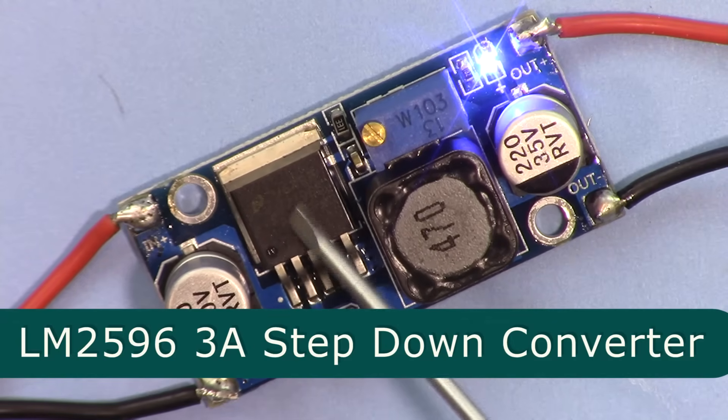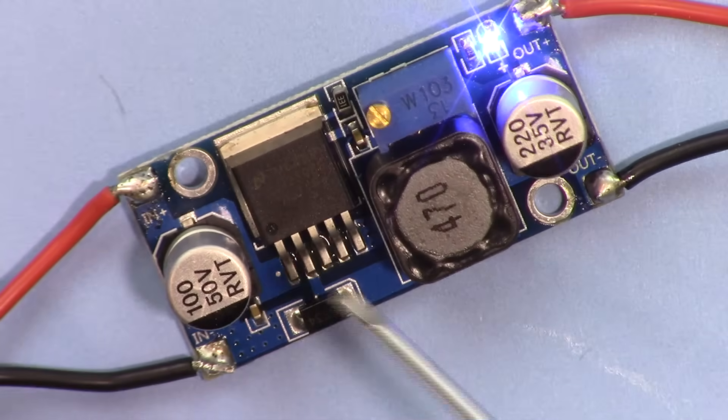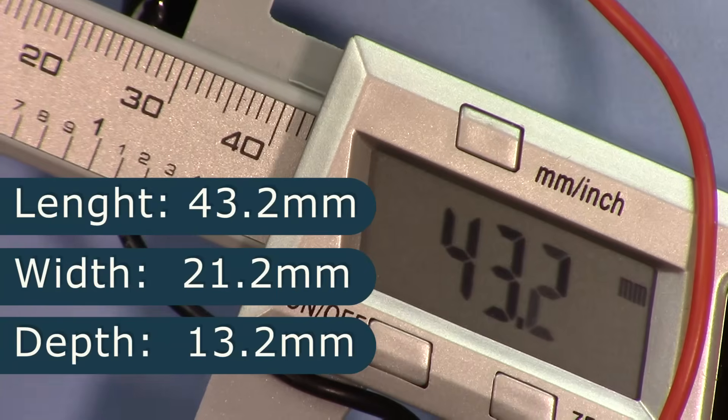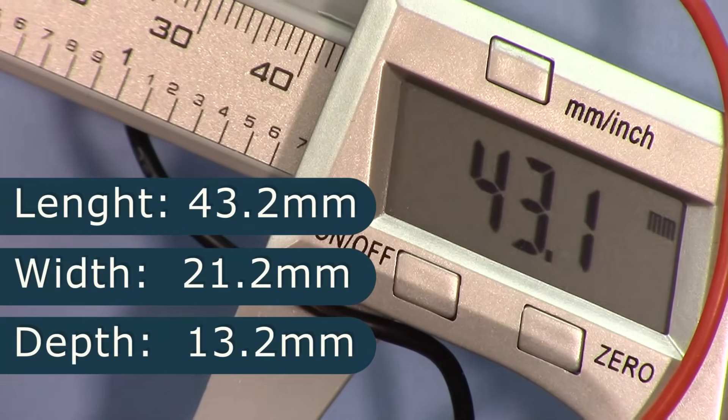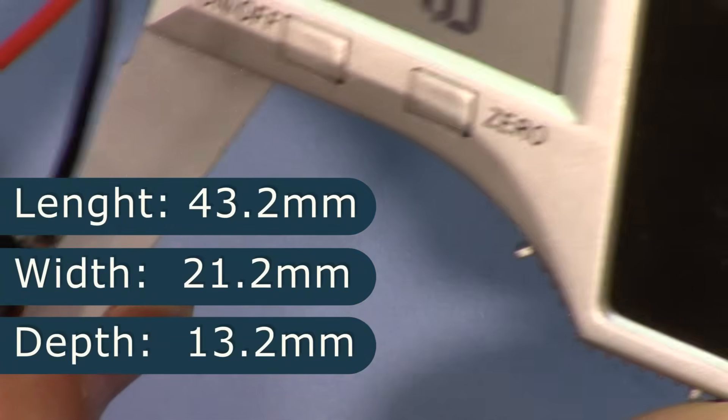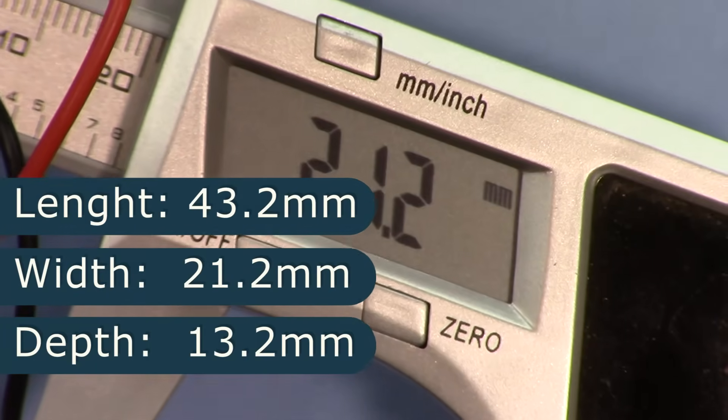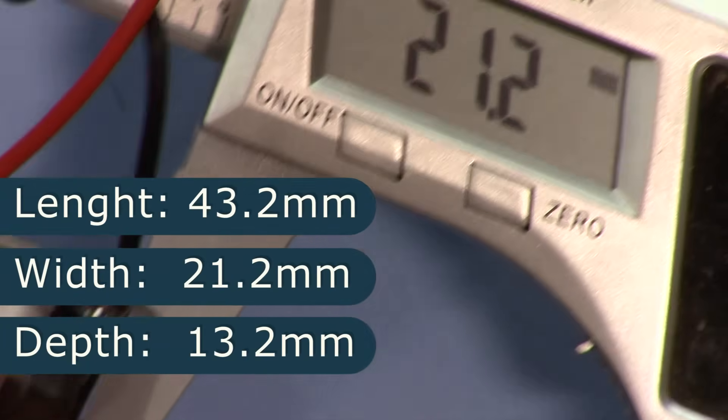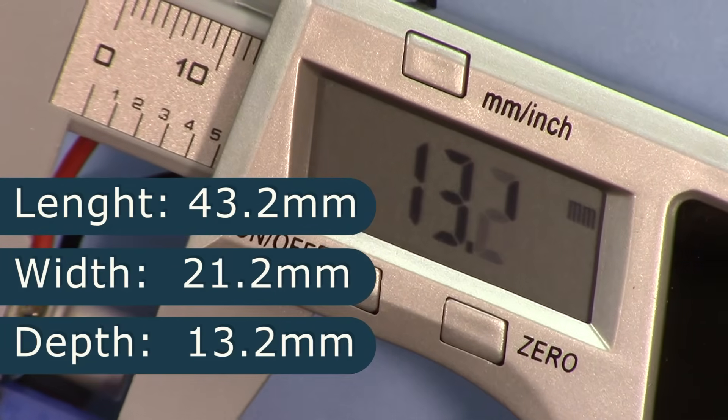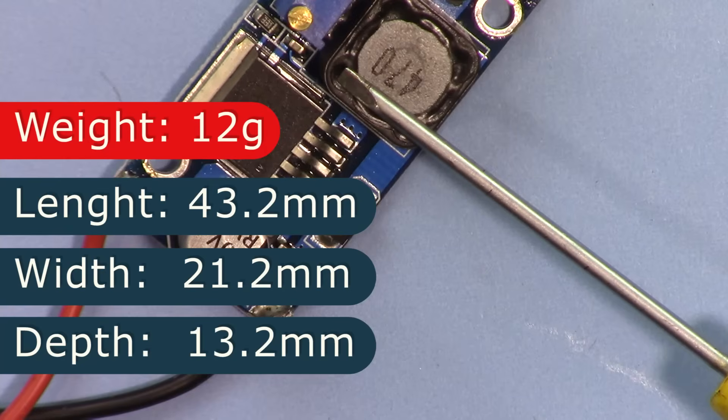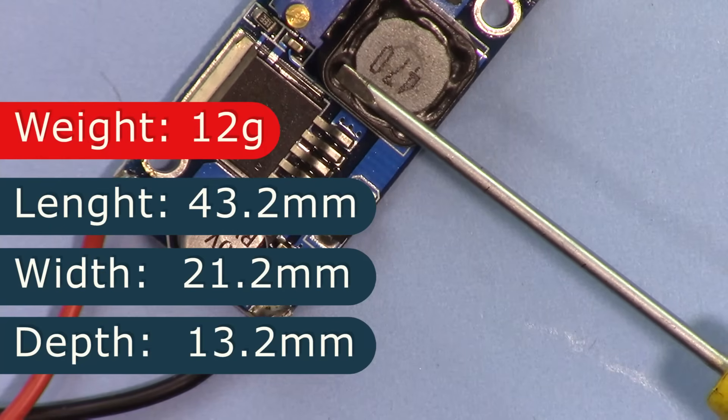This is the device. The length of the module is 43.2 millimeter, width is 21.2 millimeter, depth is 13.2 millimeter. The module weighs 12 grams which is very good. You can use it in drones and other equipment where weight matters.